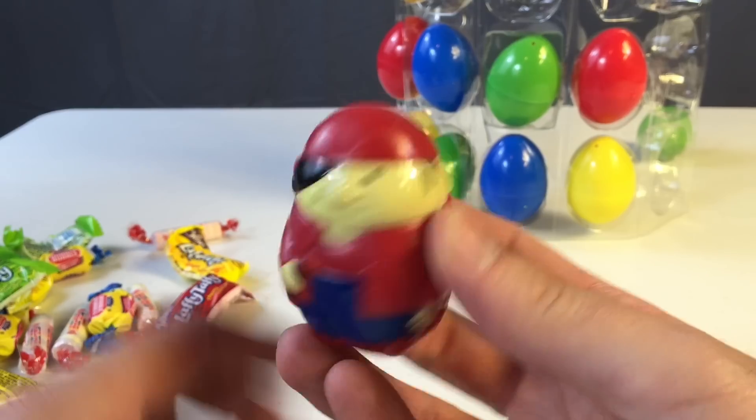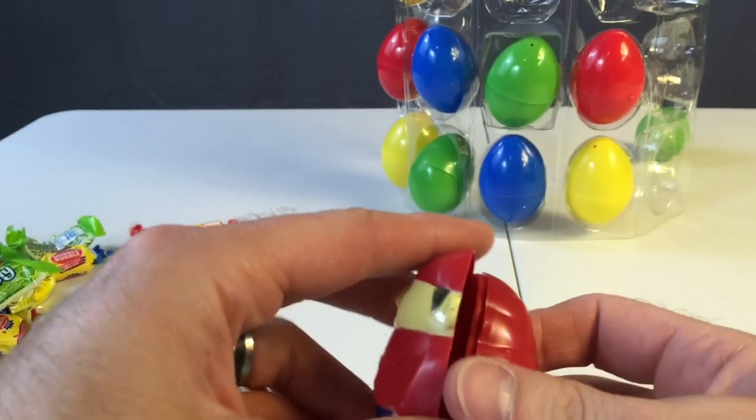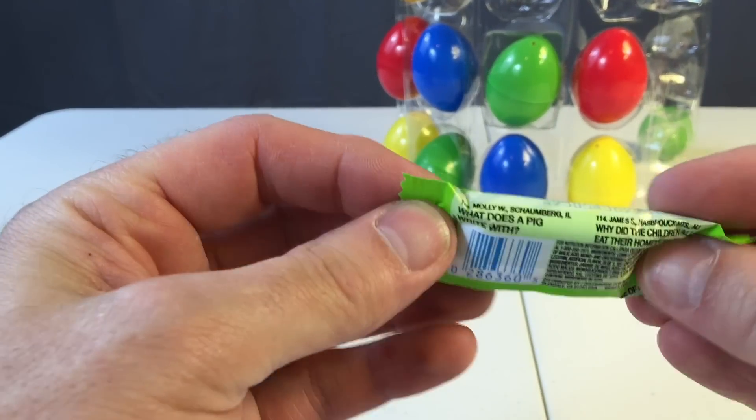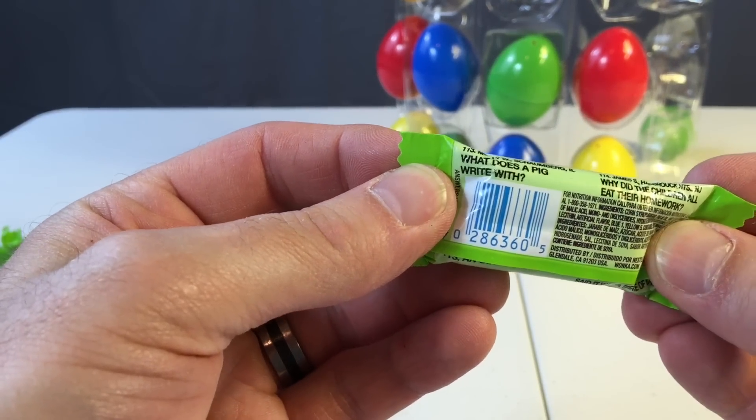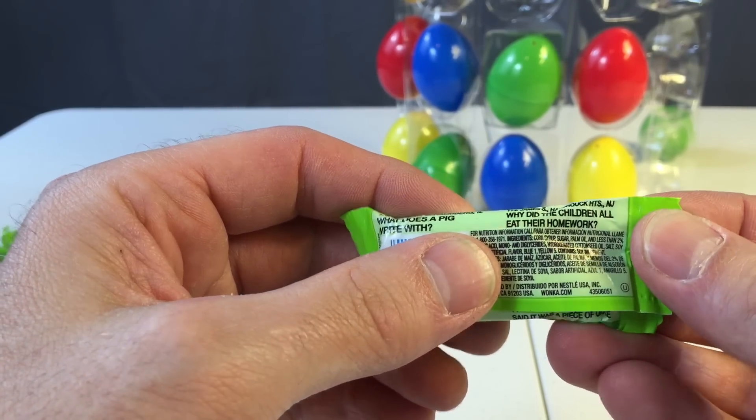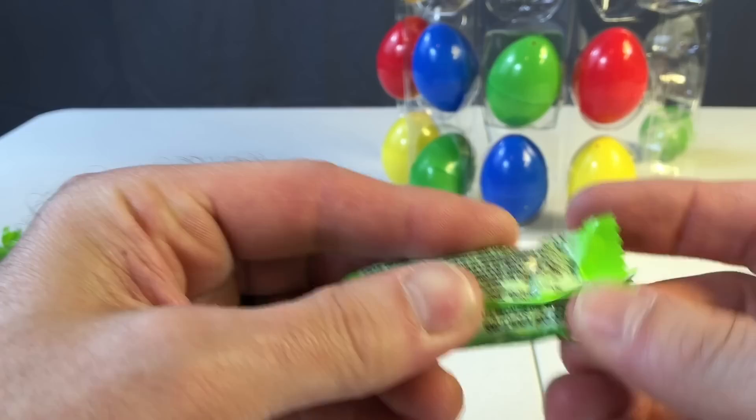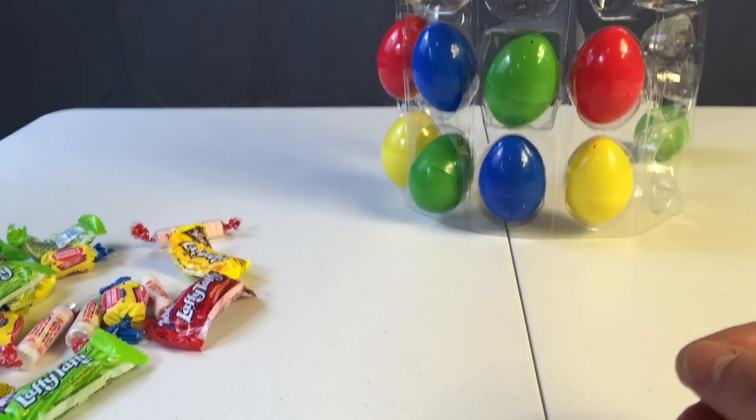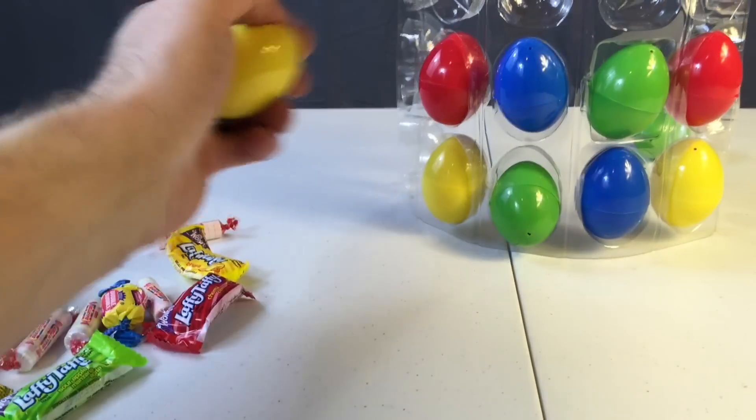And then we can open up these eggs? Yep. Apple. What does a pig write with? An oink pen. Why did the children eat their homework? Because the teacher said it was a piece of cake. It's a piece of cake. That's silly, isn't it?